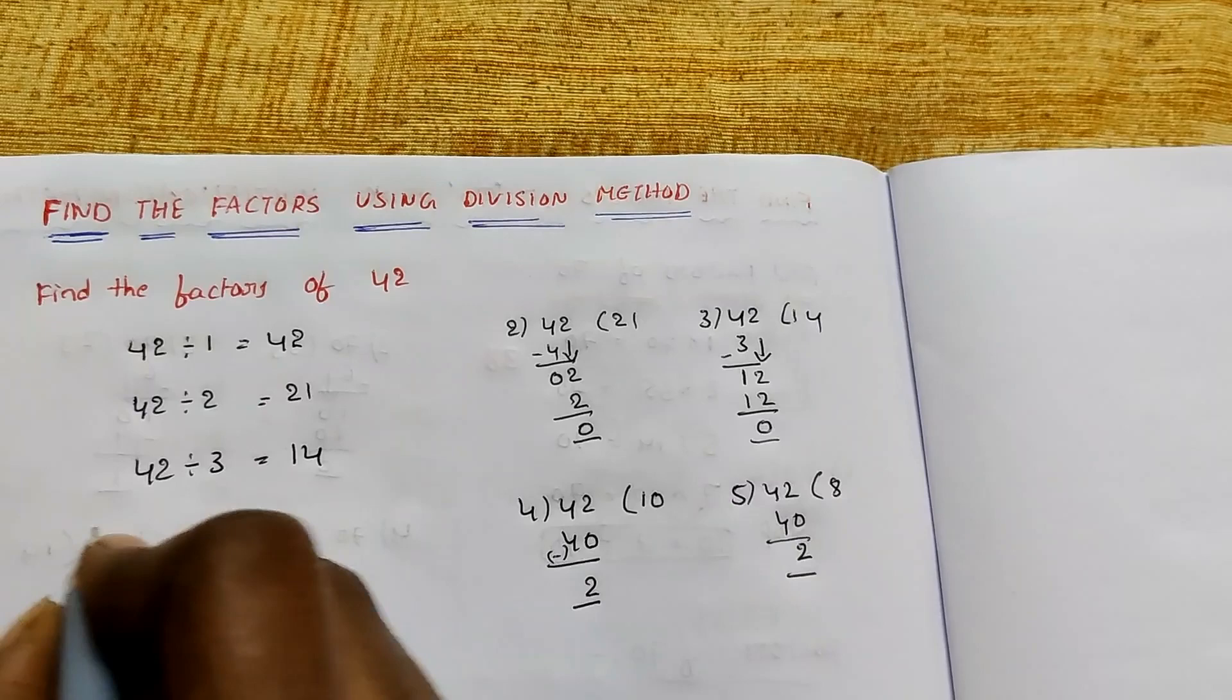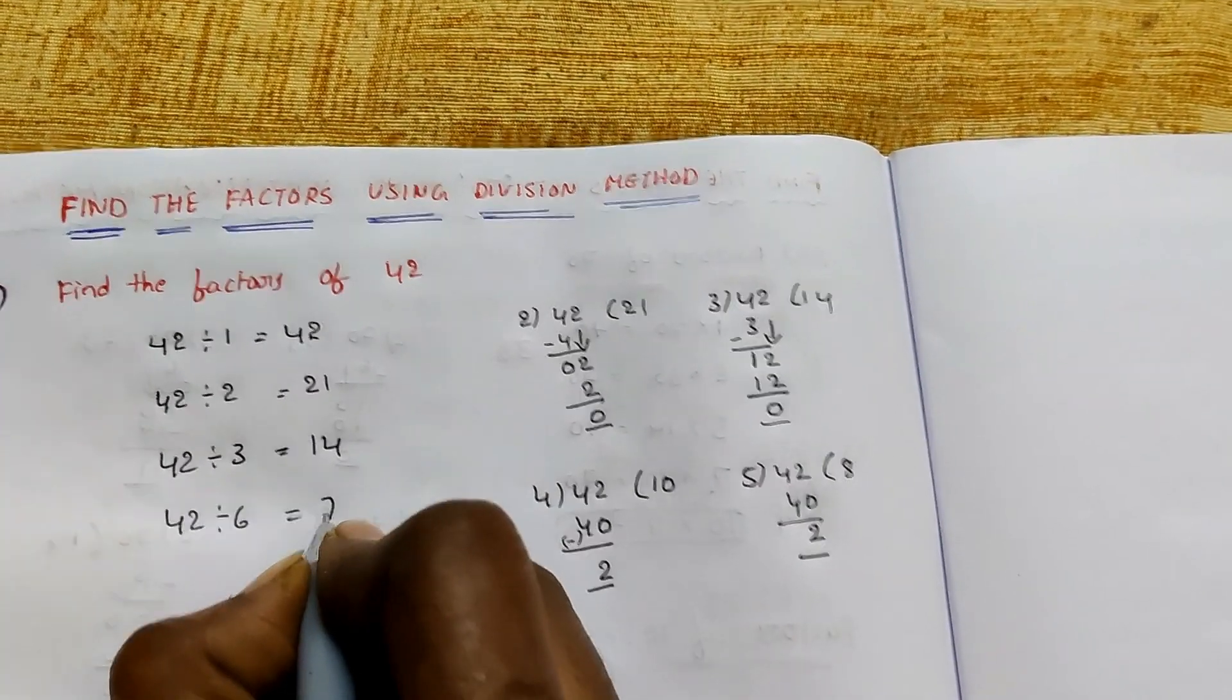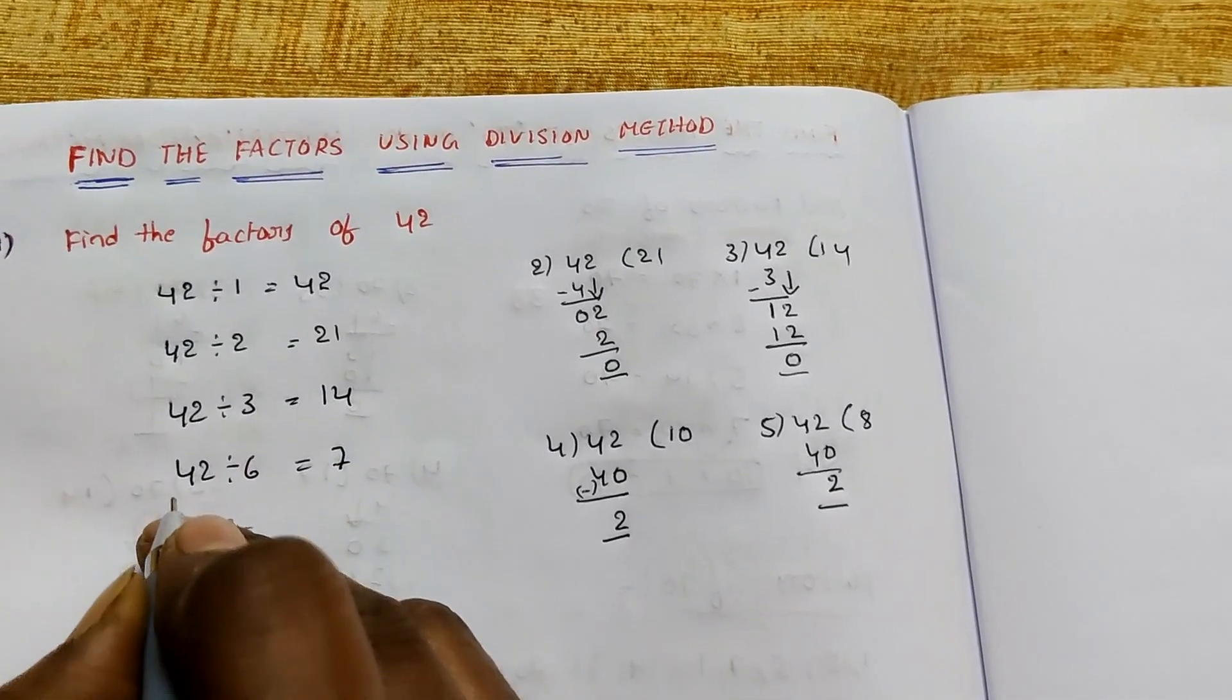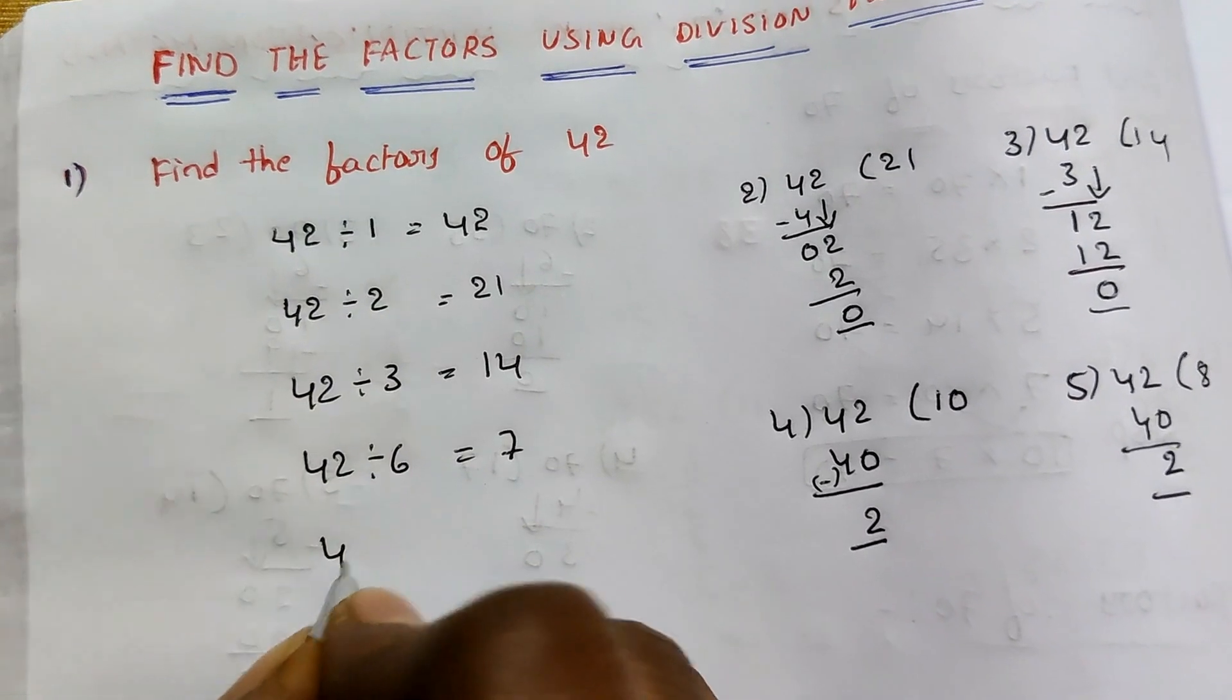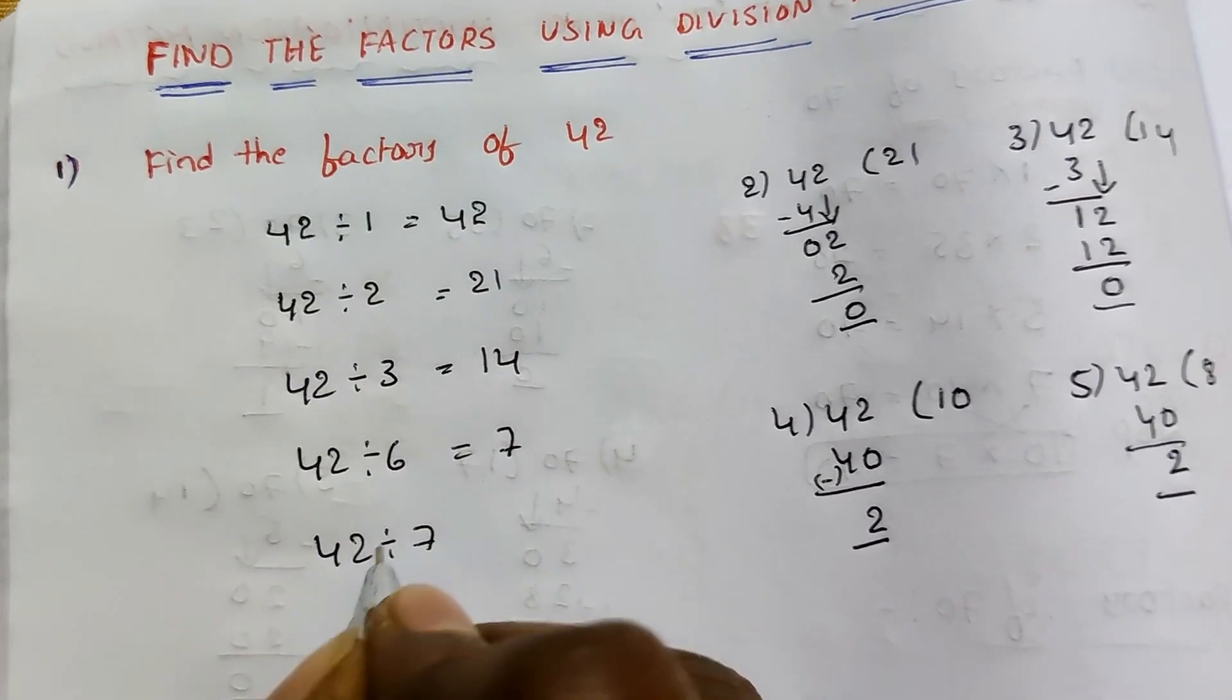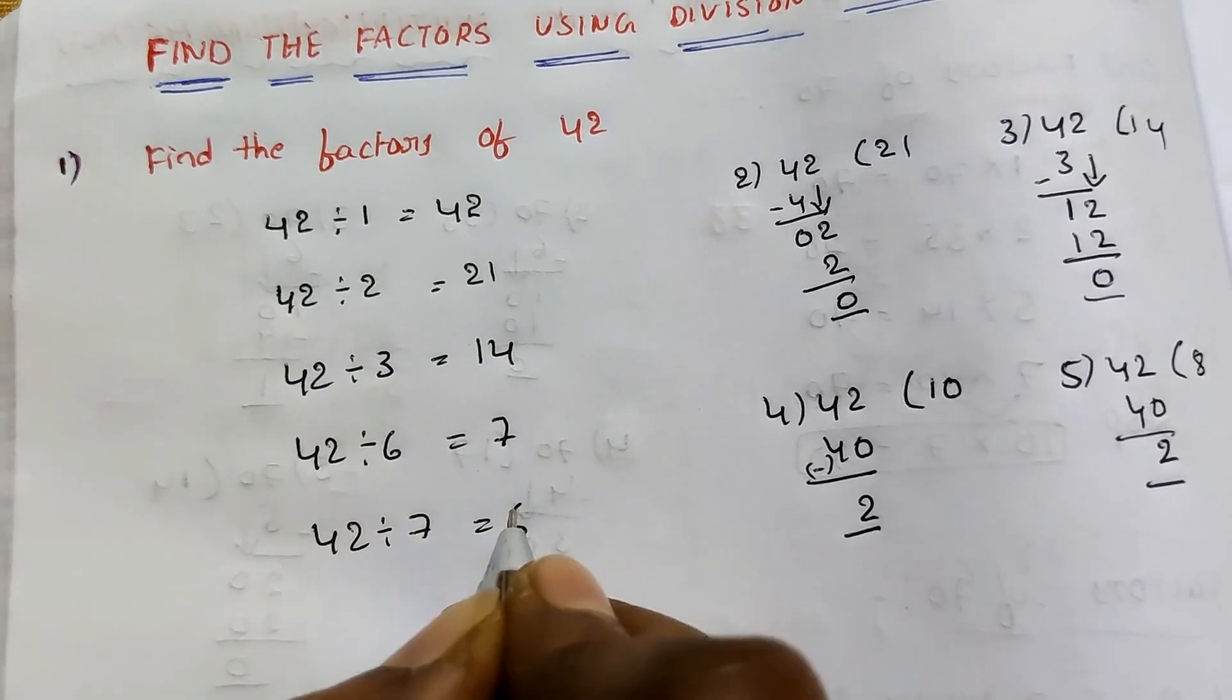Next, 6 table. 42 divided by 6 equals 7. 6 times 7 equals 42, remainder 0. So next, 42 divided by 7. 7 times 6 equals 42.